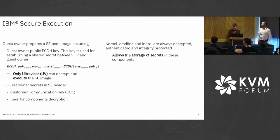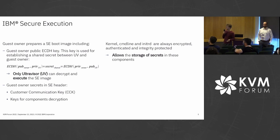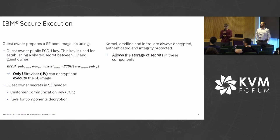How does it work? The guest owner prepares a secure execution image. This image includes a public elliptic curve Diffie-Hellman key, which is used for establishing a shared secret between the ultravisor and the guest owner. From the ultravisor's perspective, it takes the public key of the guest owner and its own private key and derives a shared secret, meaning only the ultravisor can decrypt and run the execution image. The guest owner can also store additional secrets in the secure execution header — for example, a customer communication key that's later used for dumping.